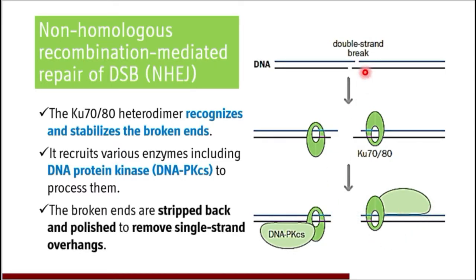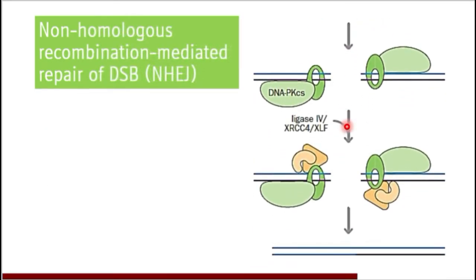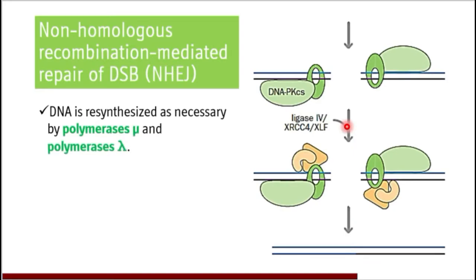After the complex of Ku70/80 and DNA protein kinases attaches to the broken ends, the broken ends need to be stripped back and polished to remove the single strand overhangs. The remaining part of DNA will then be synthesized. DNA polymerase mu and DNA polymerase delta will act on these overhangs and the complementary DNA will be synthesized.